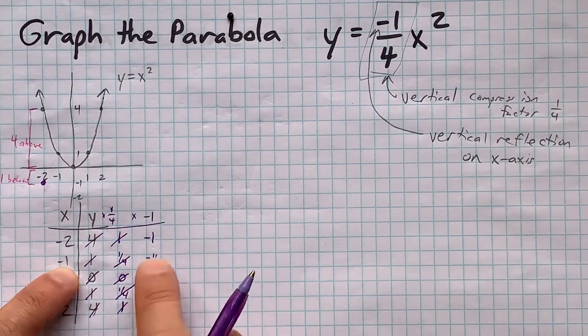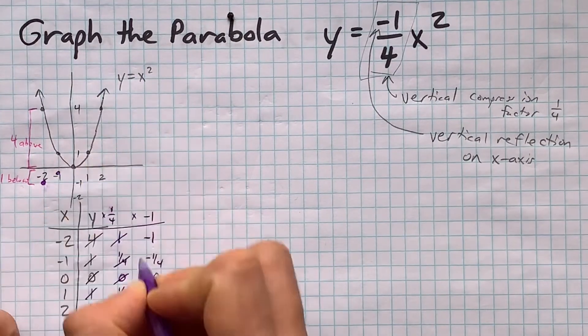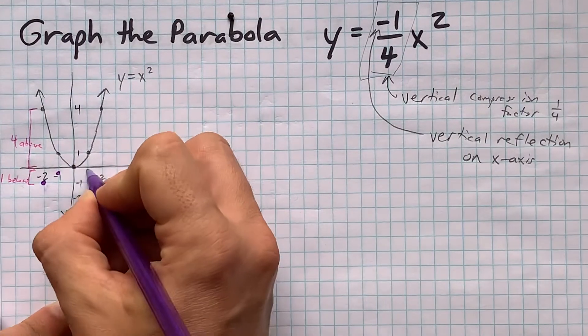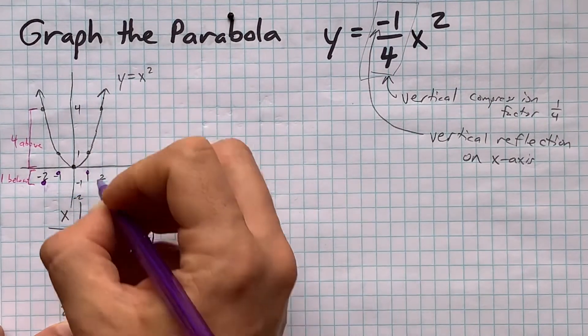We have a point at negative 1, negative one-quarter here. 0 comma 0, oh, that one didn't actually change, did it? 1 comma negative one-quarter, and 2 comma negative 1.